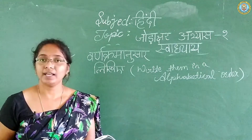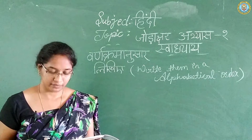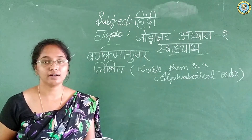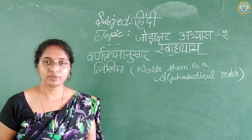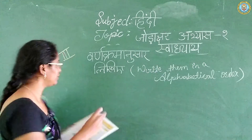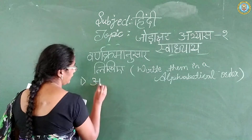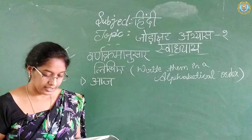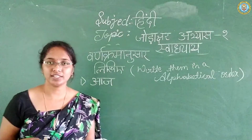तो पहला शब्द कौन सा है? पहला अक्षर वर्न माला में — आ। आ है ना? तो आ से कौन सा शब्द है वहाँ? आज। तो पहला है — आज। निज टुदे — आ के बाद कौन सी अक्षर आती है?